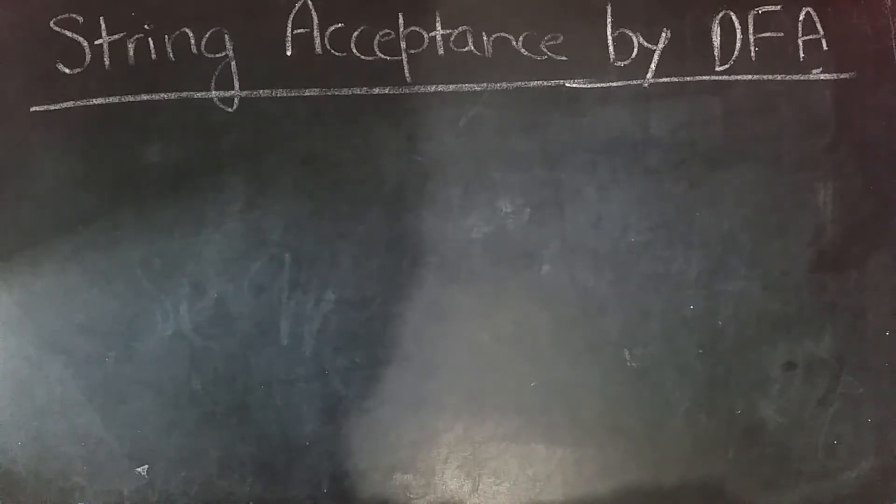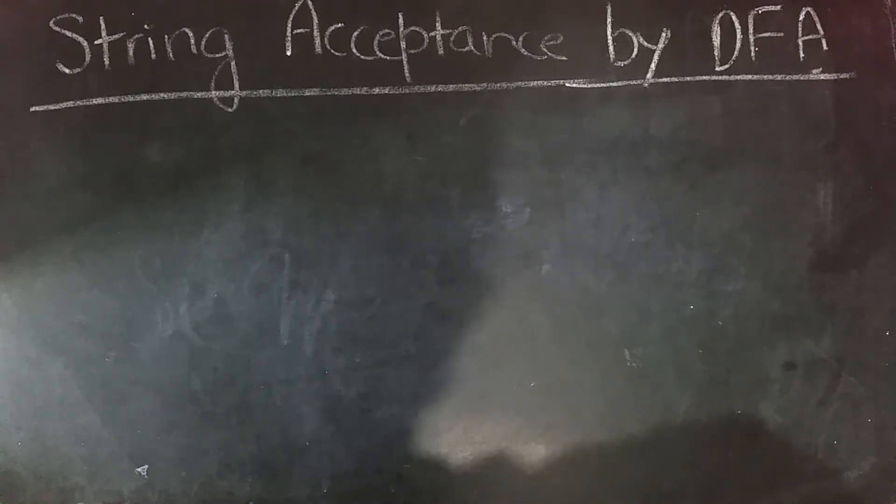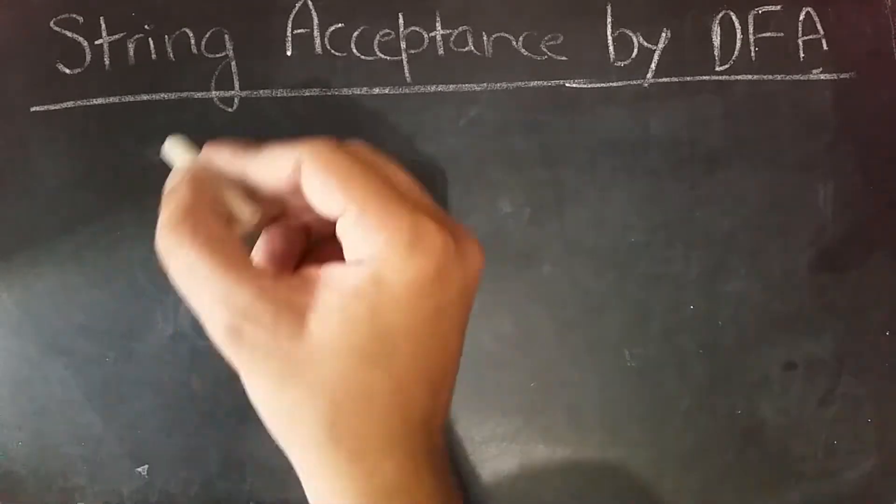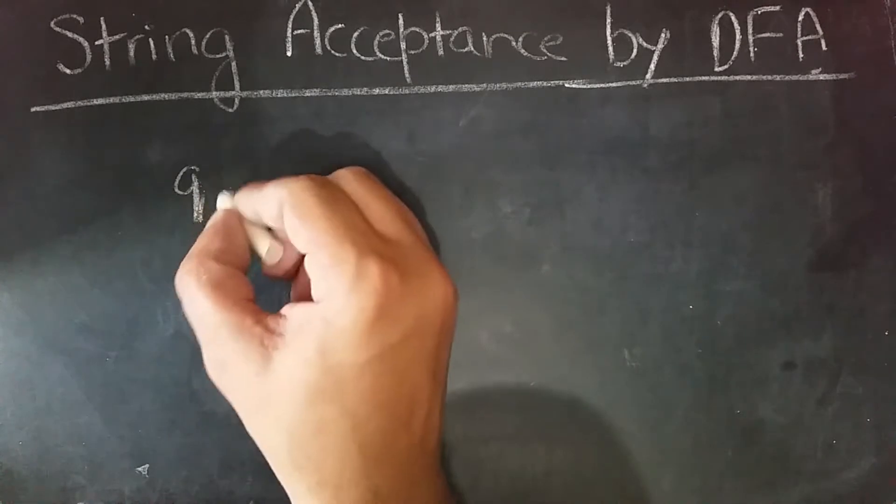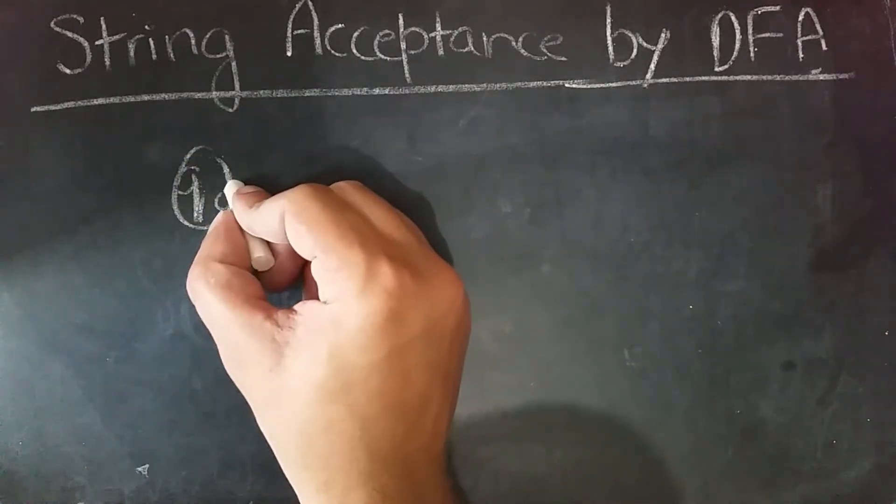Hi everyone, today we'll see how a string is accepted by a DFA. A string is considered to be accepted by a DFA when we set the input string to be processed on the initial state, and if we reach the final state, then the string is accepted. Let's see this with an example using a transition diagram.